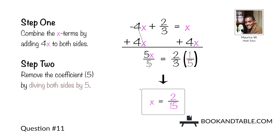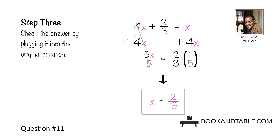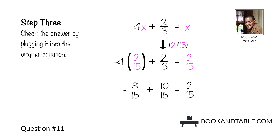Step three: check this answer by plugging it into the original equation, negative 4x plus 2/3 is equal to x. We wind up with negative 4 times 2, which is negative 8 over 15. Converting 2/3 to 15ths by multiplying by 5/5 gives us 10 over 15. Combining fractions: negative 8 plus 10 gives us positive 2 over 15. That equals x, which is 2/15, so this is the correct answer: x is equal to 2/15.